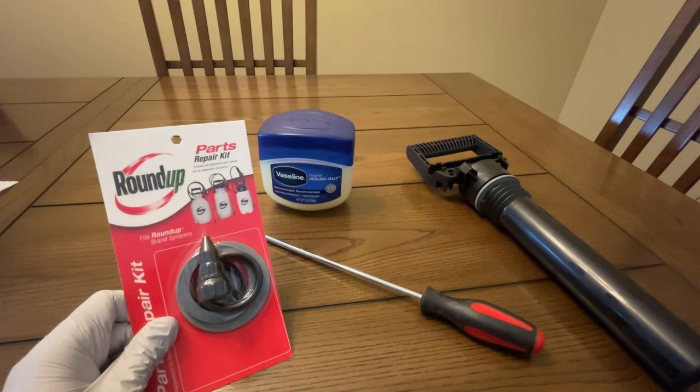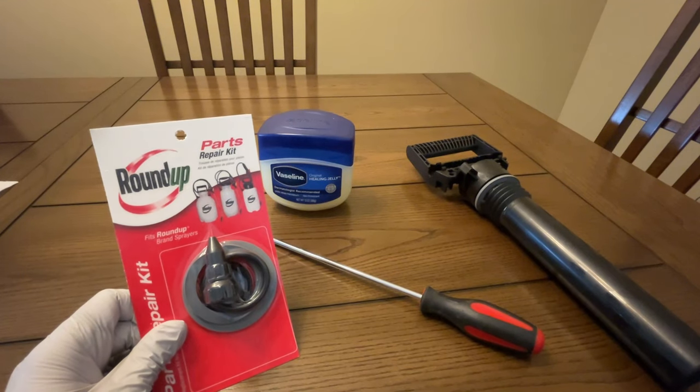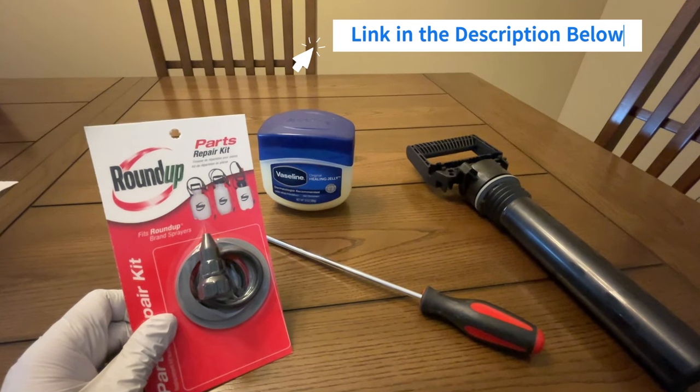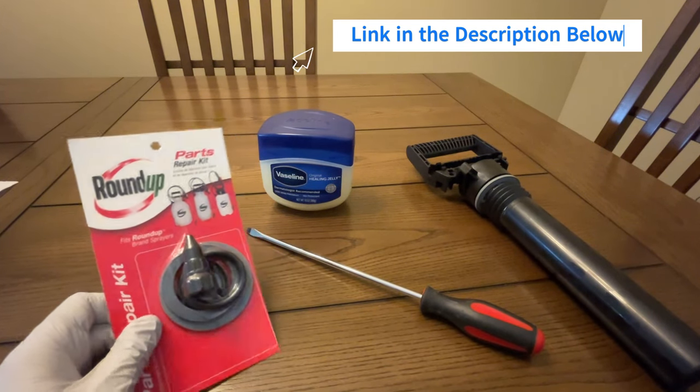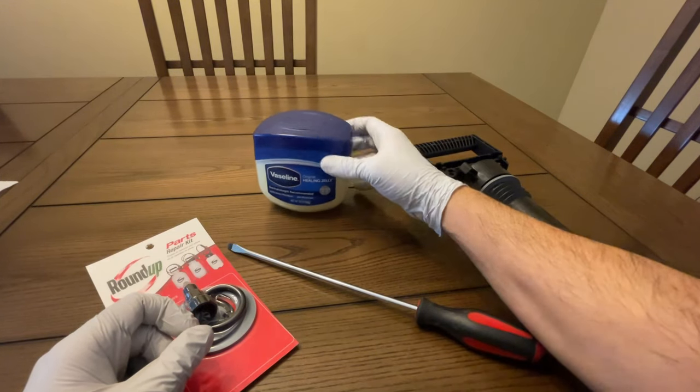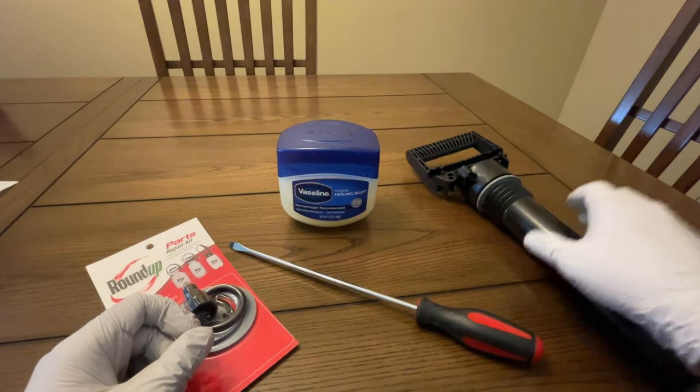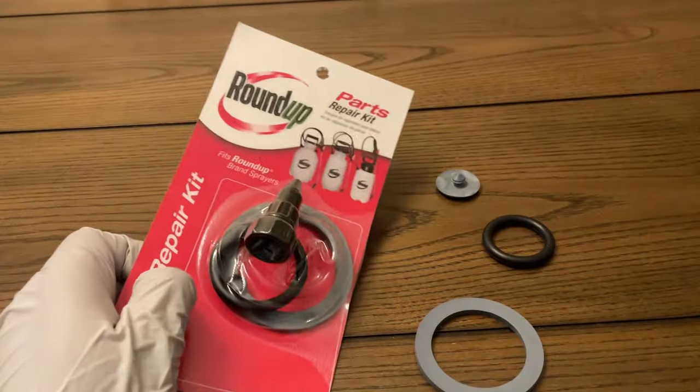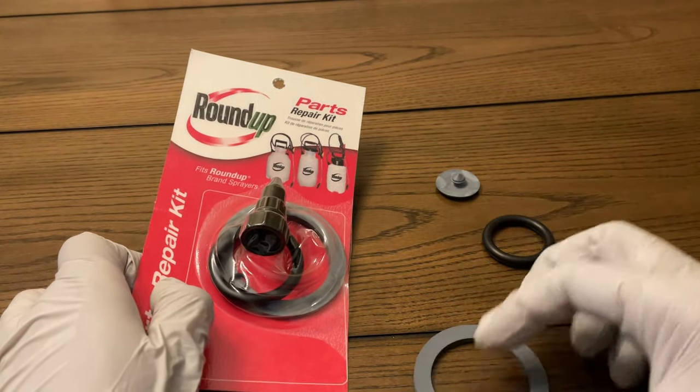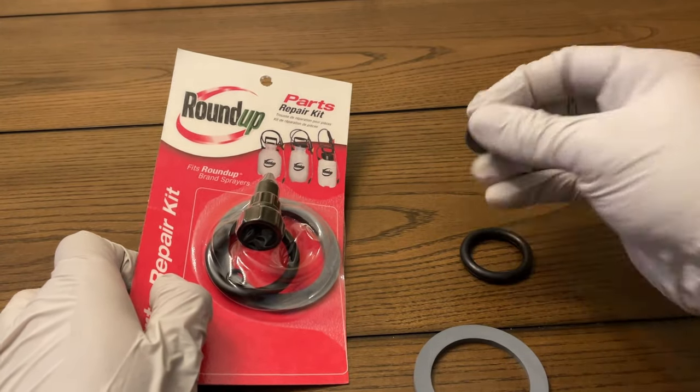These are the tools and materials that we will be using. First, you will need a Roundup sprayer repair kit. I bought this on Amazon and I'm leaving a link in the description below if you are interested. You will also need a flat head screwdriver, some vaseline, and of course your old pump. From this package for my model, we will only need the smaller gray gasket, the smaller o-ring, and finally the check valve.